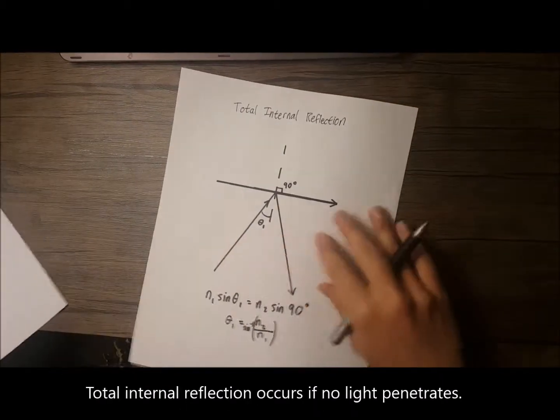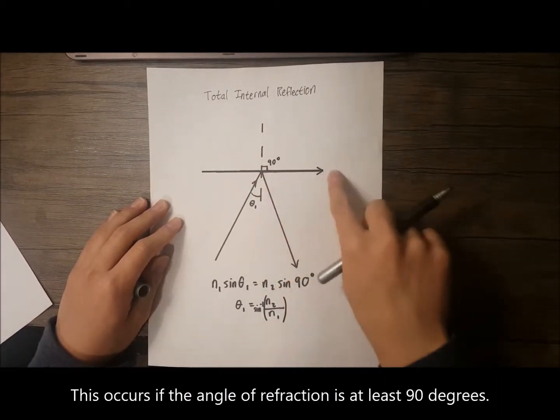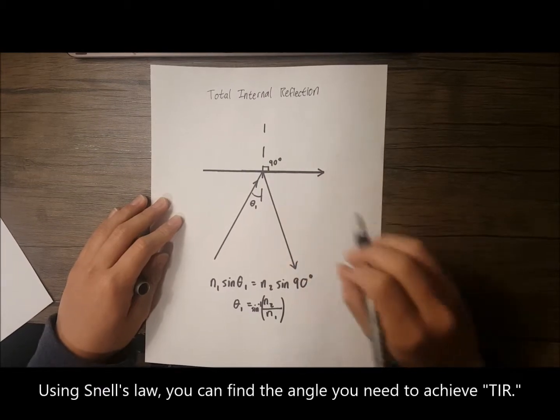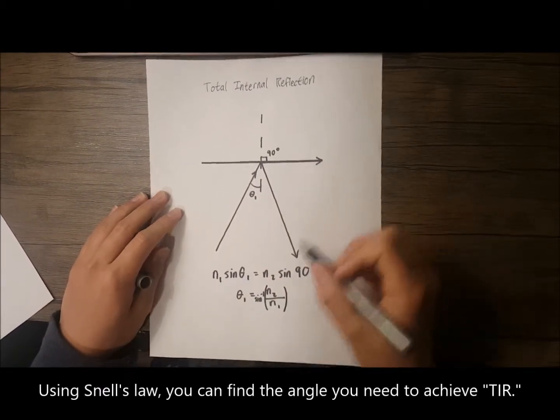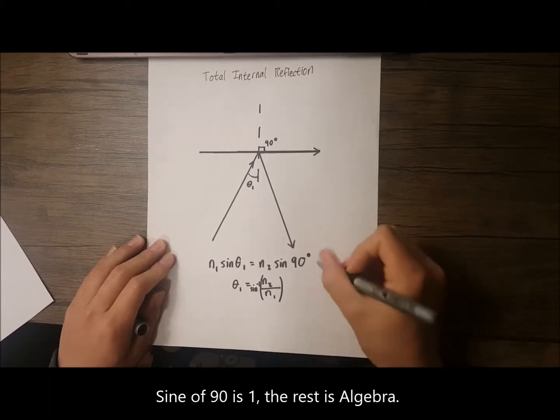Total internal reflection occurs if no light penetrates. This occurs when the angle of refraction is at least 90 degrees. Using Snell's law, you can find the angle you need to achieve TIR. Sine of 90 is 1, the rest is algebra.